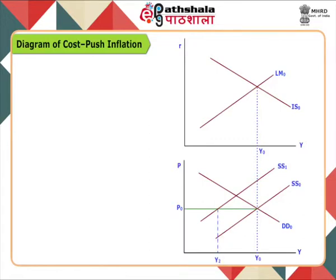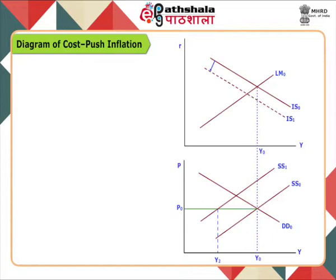However, aggregate demand remains at Y0. This results in a mismatch of demand and supply — supply falls short of demand by Y2 to Y0. Shortage of supply builds pressure on the price level, and prices start rising. Due to the increase in price level, the IS curve shifts to the left, from IS0 to IS1 in the upper panel. The rise in price level also shifts the LM curve to the left, from LM0 to LM1.